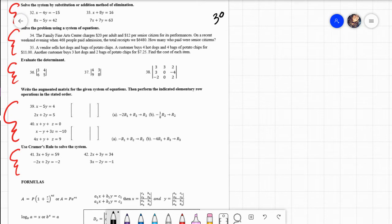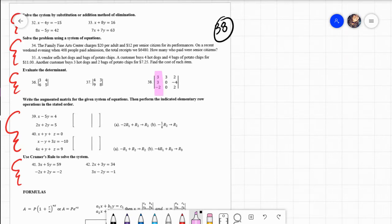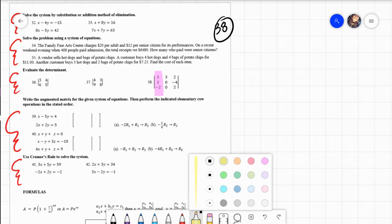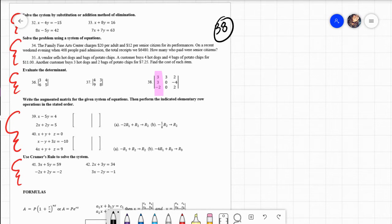Let's do problem 38. 38 is a 3 by 3. The way you find the determinant of a 3 by 3 is to actually do what we just did in the previous two problems a couple of times. Those are going to be called minor determinants. The way you're going to do that, y'all, is we're going to take this first column and we're going to multiply each value in that first column by a determinant.